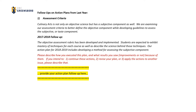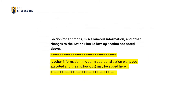The follow-ups on action plans section contains the action plans the program was expected to execute during the academic year. An editable text area containing the words "provide your action plan follow-up here" is where you should follow up on the execution of the plan. Provide information like: did you execute the plan, how did the execution go, and what were the results? The next section you'll encounter will be the section for providing additional miscellaneous information related to the action plan follow-up section.